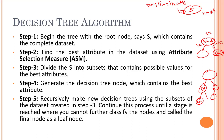That's how the decision tree algorithm works. In our next video we are going to look into some of the attribute selection measures — the ways by which we can determine which is the best attribute.